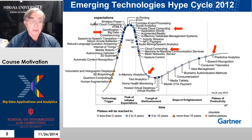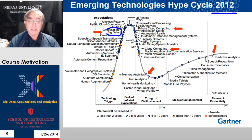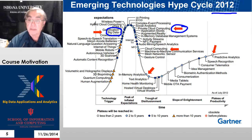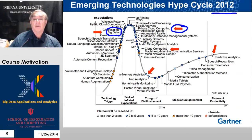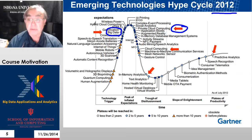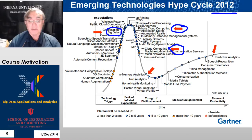Here we have the famous Gartner Hype Cycle for 2012, 2013, and 2014. In 2012, big data was still in the technology trigger. Cloud computing is a little older. Here's private cloud computing, which is going to disappear — enterprises have realized it's not a terribly good idea, and they might as well do real cloud computing where they share resources and get economy of scale. Those clouds are running analytics: in-memory, text, and predictive analytics.